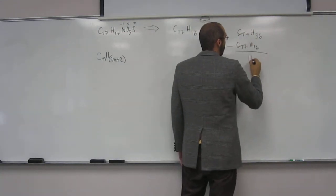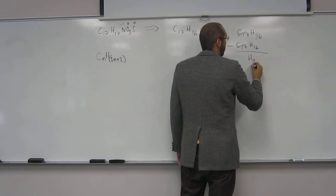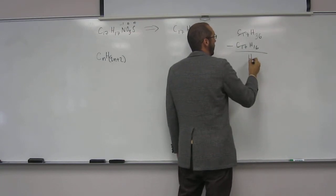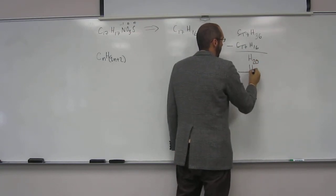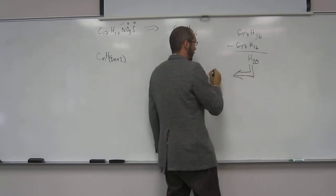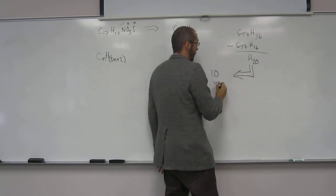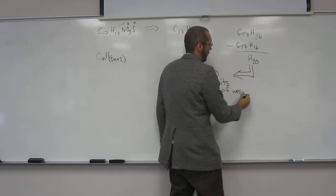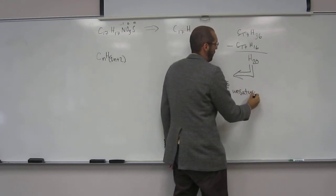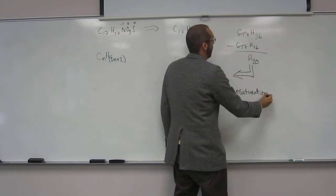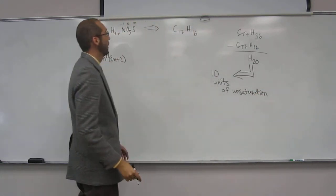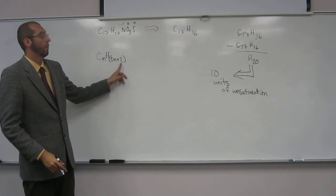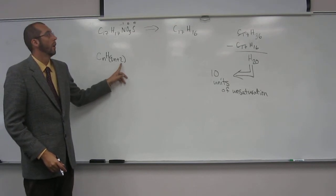So what do I got? H20. Thank you. So how many units do I have? 10 units of unsaturation. How's it 36 because 16 is 32? 16 to 16 is 32 plus 2 is 34.